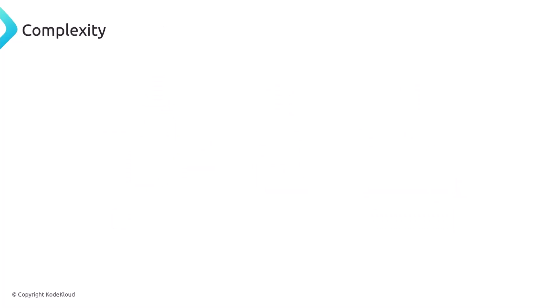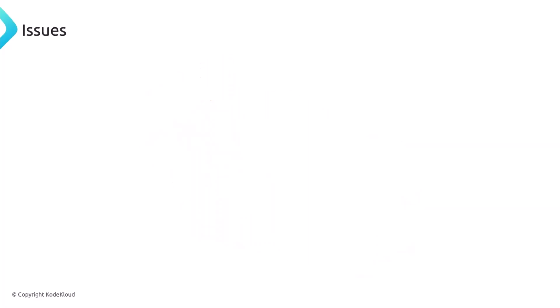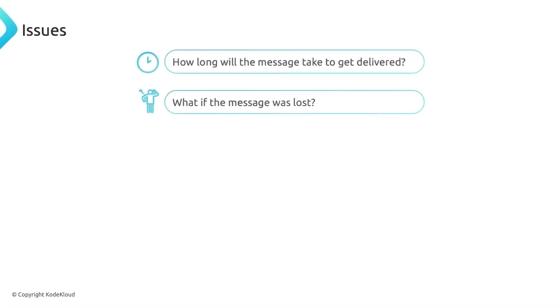Now, imagine passing a note from the first row, third student, to row five, student three. Suddenly you have to pass that note through multiple rows — it could be pretty difficult. Some of the issues: how long will it take for that student to read that message? What if the message was lost, or someone dropped it?